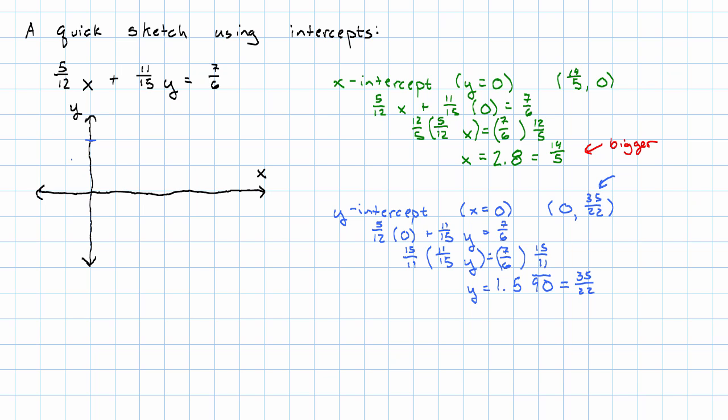I'm going to label this point 35 twenty-seconds, and label this point 14 fifths. And then I'm just going to draw the line through those two points. This is a quick sketch of this graph.